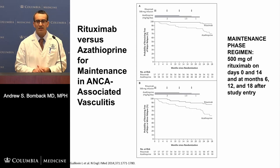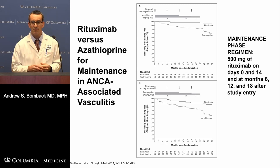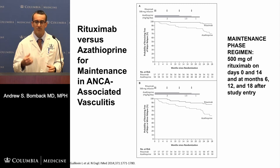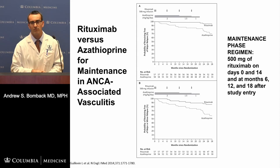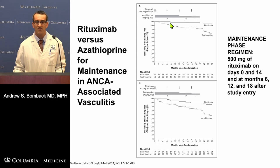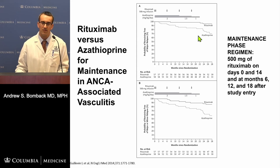The original Main RITSAN study compares rituximab versus azathioprine for maintenance in ANCA-associated vasculitis. The maintenance regimen uses 500 mg of rituximab twice at the start of maintenance — 1,000 mg total — then 500 mg at months 6, 12, and 18, for a total of four rounds. Rituximab clearly outperformed azathioprine; as azathioprine was weaned off, there were many more relapses in the azathioprine arm than in the rituximab arm.